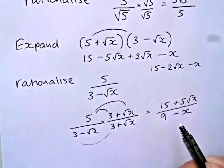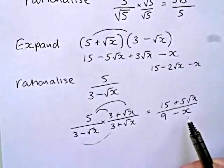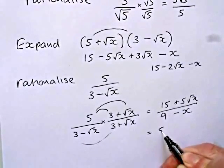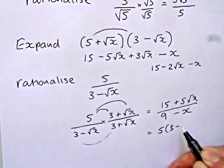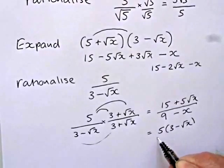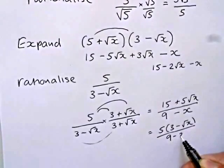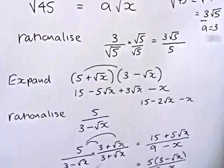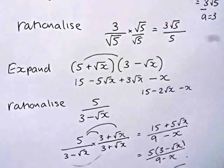So we have now got 9 minus x. We've eliminated surds from the denominator. So we've rationalized. Possibly want to take the 5 out as a common factor. But there's really nothing more we can do than that. So there's a few reminders then on how to handle surds at GCSE level.